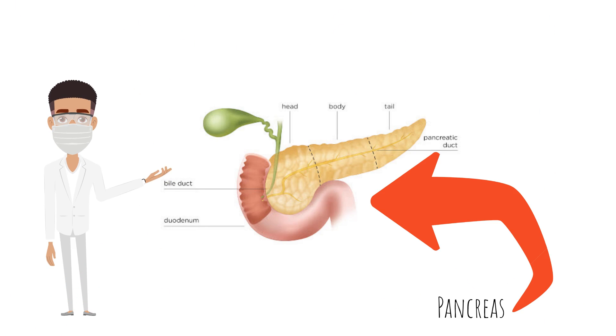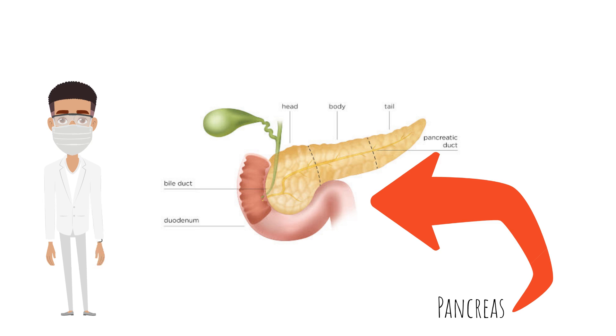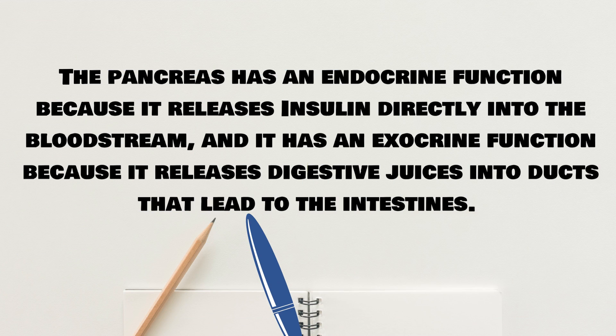This is what the pancreas looks like. The parts of the pancreas are the duodenum, the bile duct, the head, the body, the tail, and the pancreatic duct. The pancreas has an endocrine function because it releases insulin directly into the bloodstream, and it has an exocrine function because it releases digestive juices into ducts that lead into the intestines.